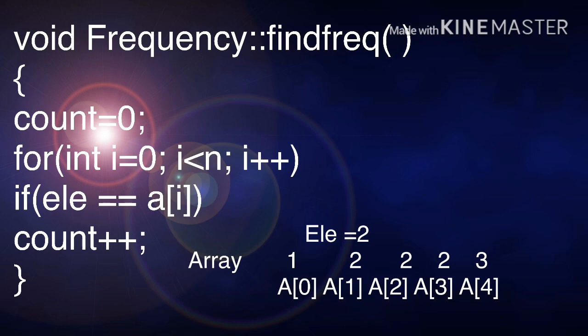Whether 2 is equal to 1? Not equal to 1, so count does not increase. So again, it goes back to the for loop and i will be increased by 1.